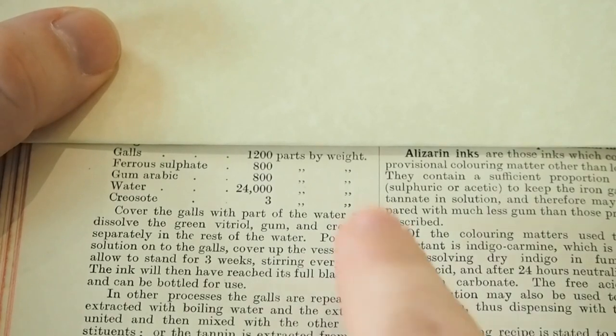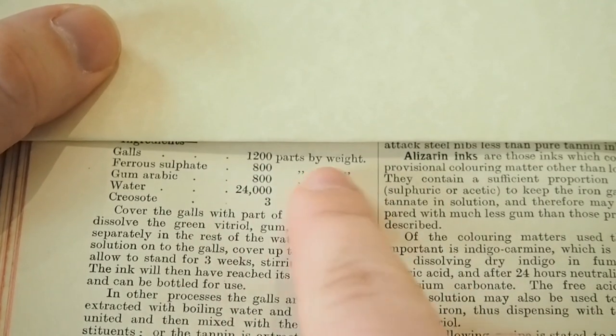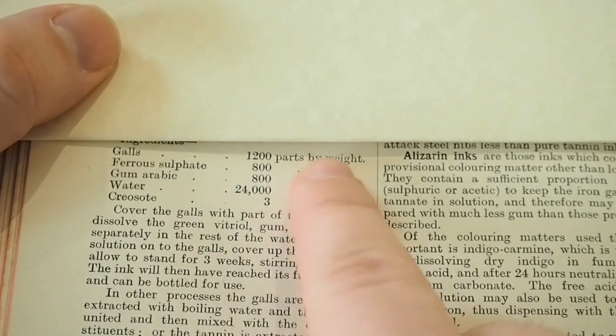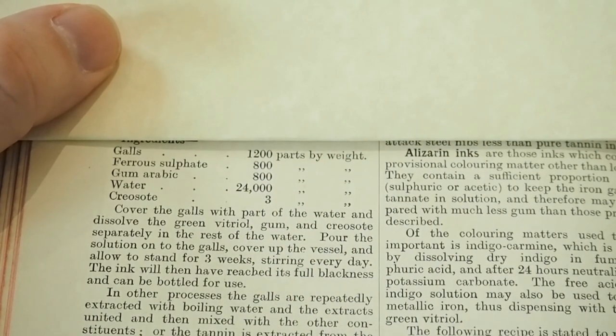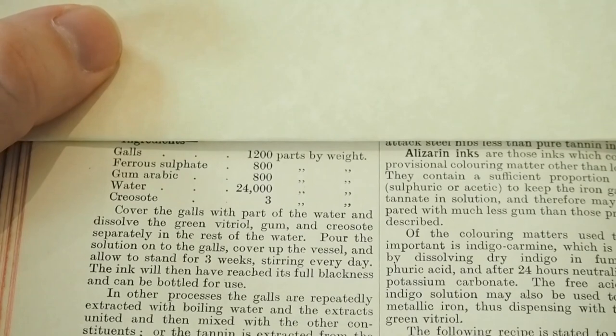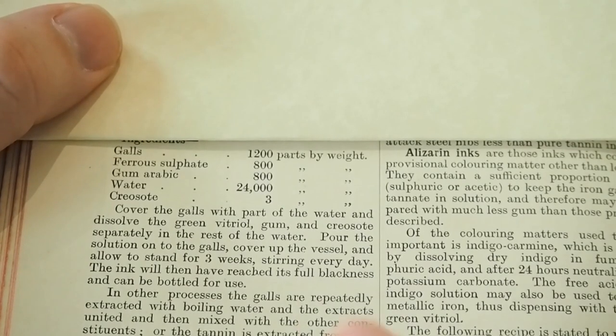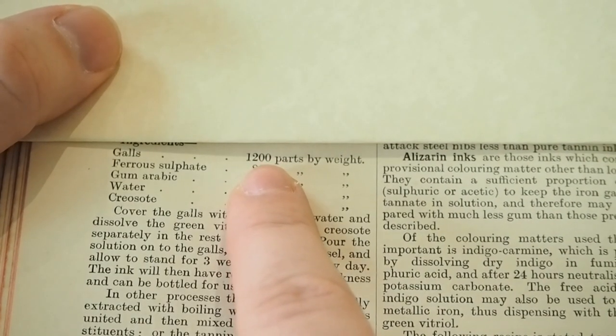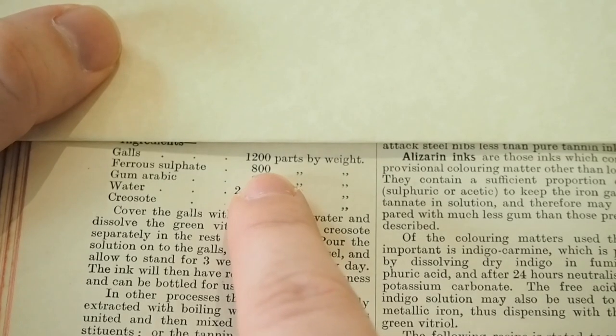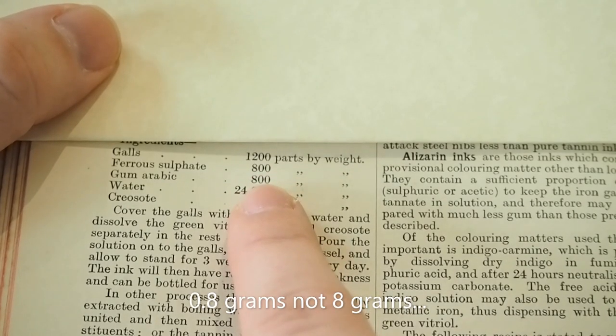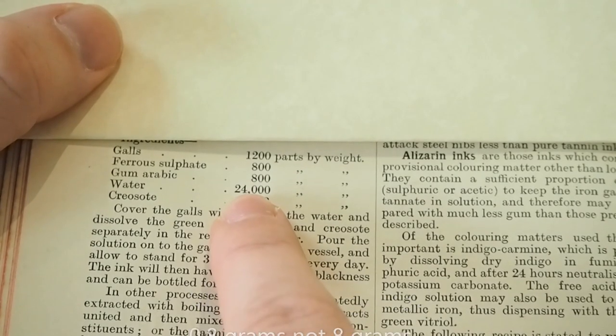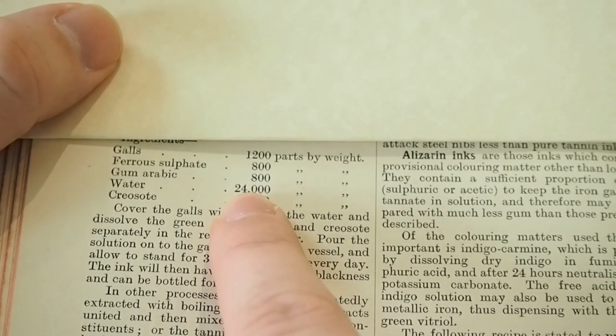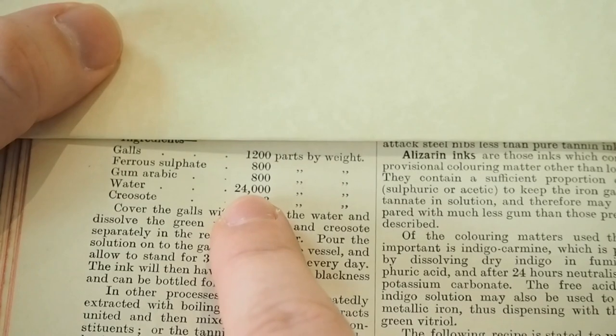Now you can see that it says parts by weight. It's 1,200 parts by weight, 800 parts by weight and so on. Basically what that means is we just have to balance everything out by weight. If I used 1.2 grams of galls, I would use 8 grams of ferrous sulfate and 8 grams of gum arabic.